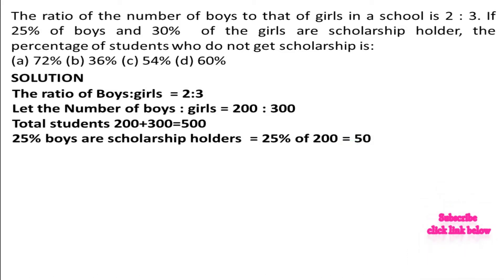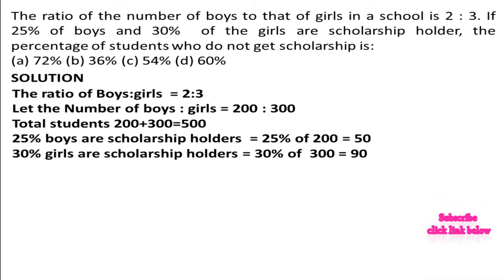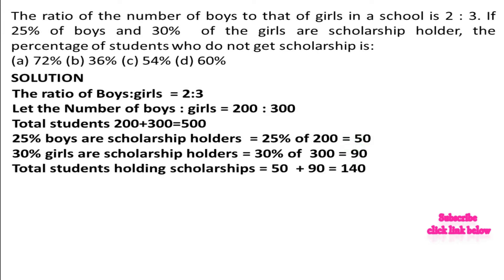30% of girls are scholarship holders, so 30% of 300 girls = 90 girls are scholarship holders. So total scholarship holders: 50 boys plus 90 girls = 140 students are scholarship holders in total.